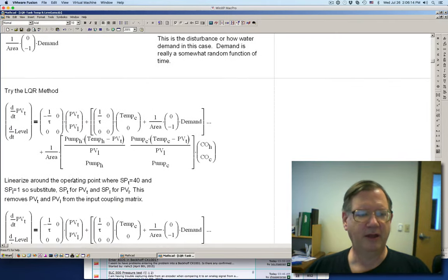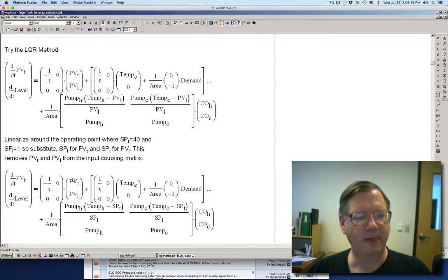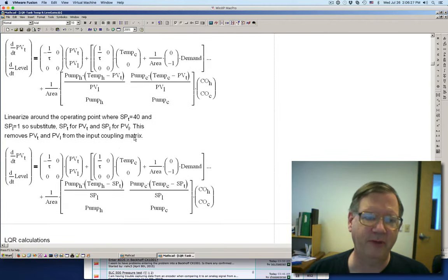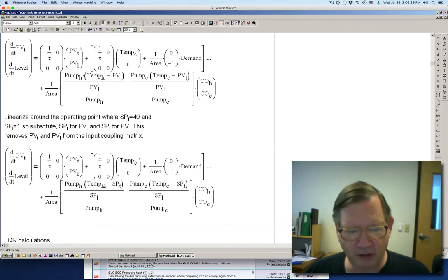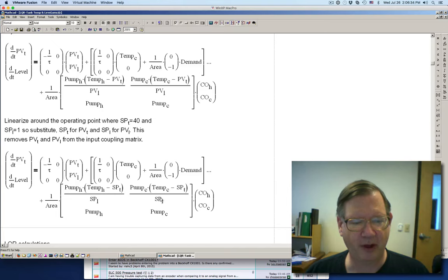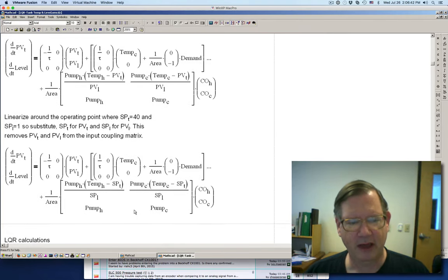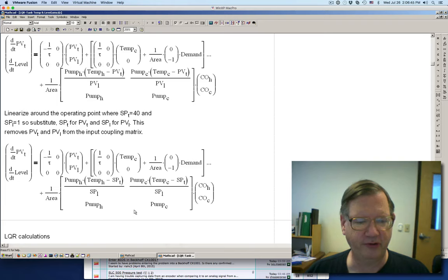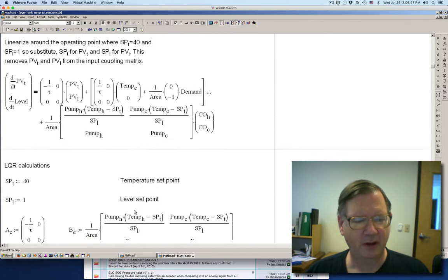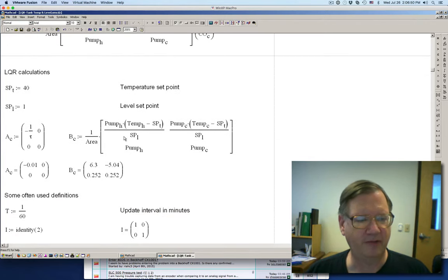So now we need to do the linear quadratic control. And what we need to do is get rid of this process variable. In other words, this is the level. And we've got to linearize it. So I'm going to assume that the level is going to stay close to the set point, which is at one meter. So I substitute this and this for the actual levels for the set point. And there's no need to do any substitutions for the temperature. So we have the temperature set point, the level set point.